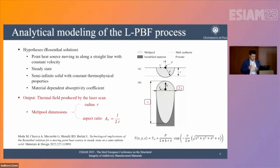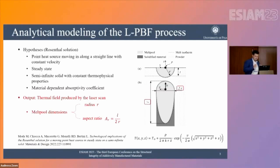From the thermal field, we obtain the melt pool boundaries — namely the boundary of the surface having the solidus temperature of the material — and so we can define the width of the melt pool, the length of the portion of the melt pool that is solidifying at each moment, and consequently the radius and the aspect ratio, namely the ratio between the length and the width of the melt pool.